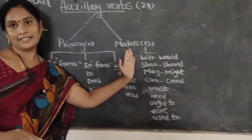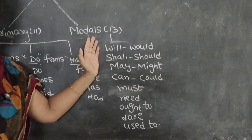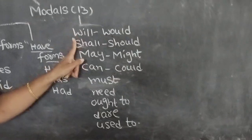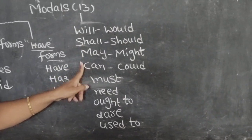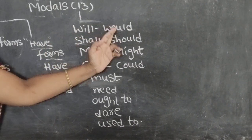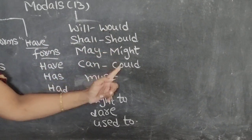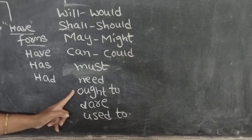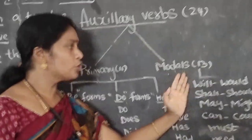Coming to the modals — there are 13. What are those? Will, shall, may, can, would, should, might, could, must, need, ought to, dare, used to.